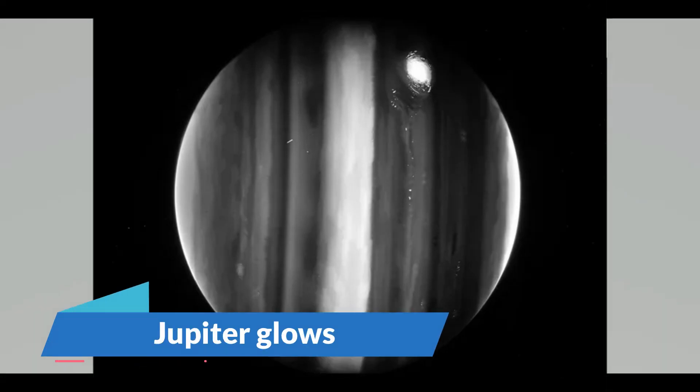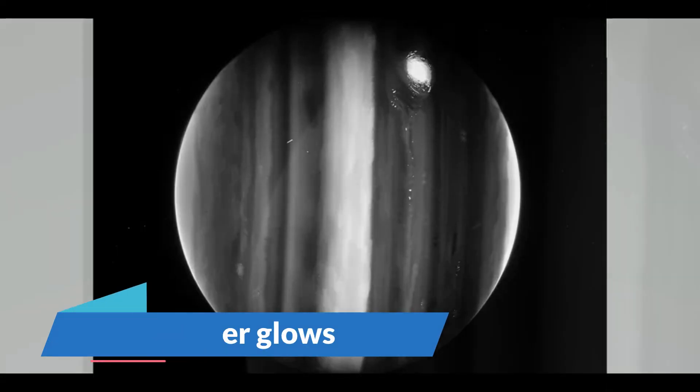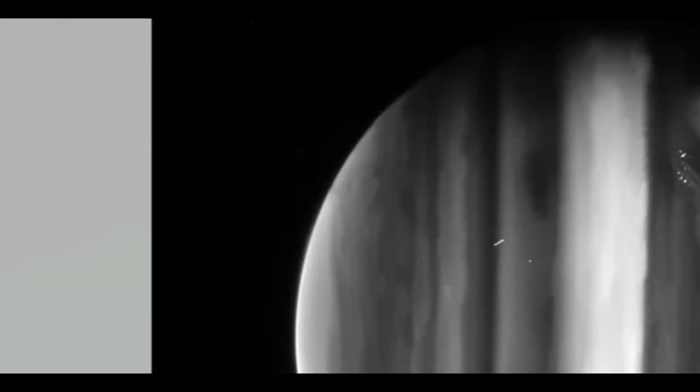Number 1. Jupiter Glows. Jupiter always glows, even when viewed sideways in raw data.